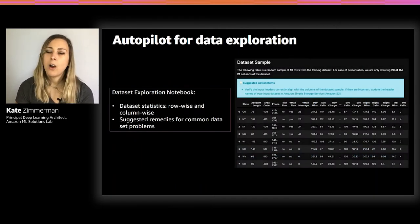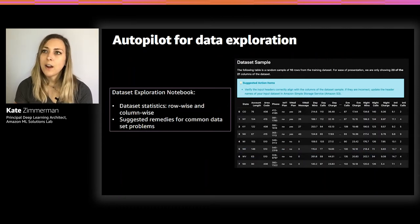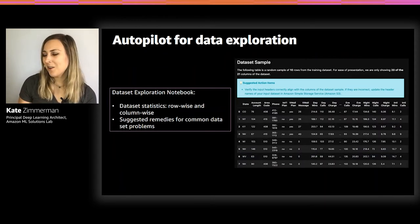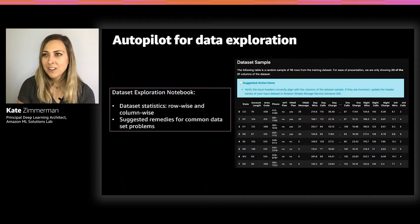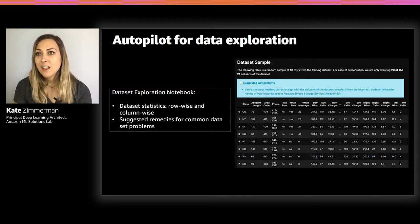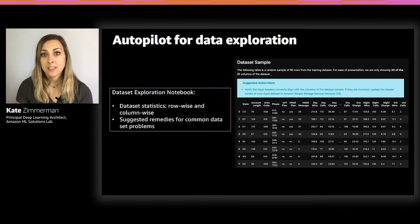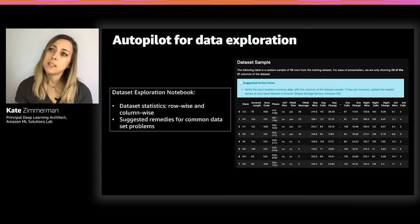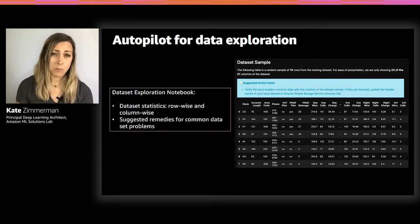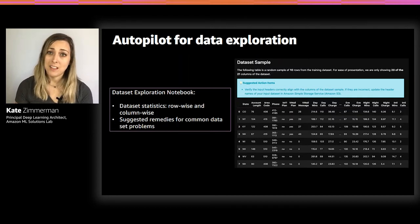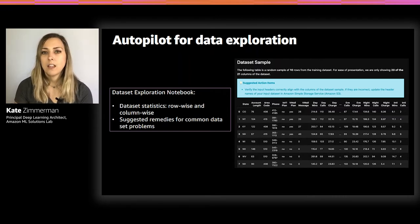Autopilot is very transparent — not a black box. At the end of your Autopilot training job, you get a notebook showing the insights Autopilot discovered during data preparation and feature engineering. This is actual Python code you can access, edit, and change. It gives recommendations such as flagging missing values that may be affecting model results, or identifying outlier features. You can then go back, adjust your data set, and retrain your Autopilot job to improve model performance.